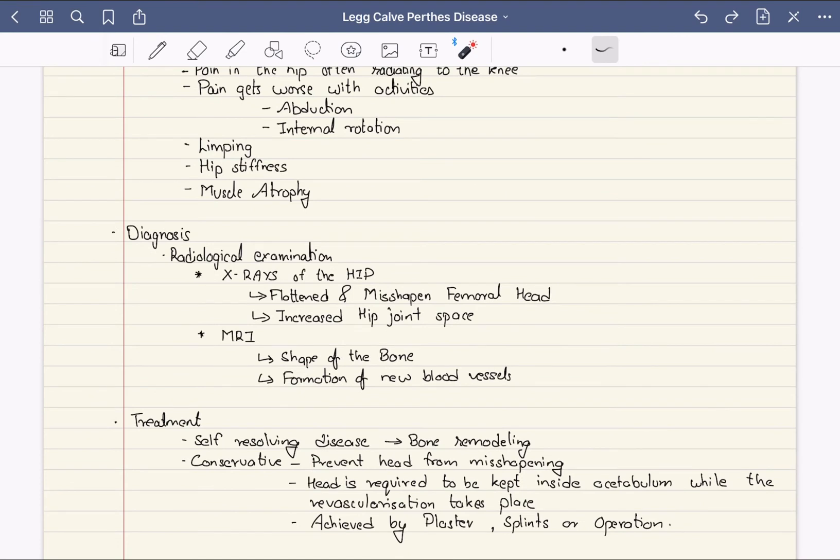Perthes disease is a self-resolving disease that resolves through bone remodeling. The old necrosed bones are replaced with new bones, and over time, normal functioning of the hip joint is restored. The exact reason is unknown. Since it's self-resolving, the treatment method is conservative, requiring prevention of the femoral head from misshaping. The head must be kept inside the acetabulum while revascularization takes place, achieved through use of plaster, splints, or operation.